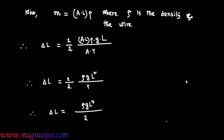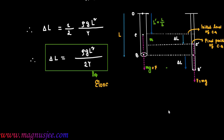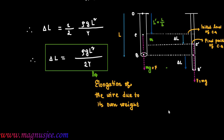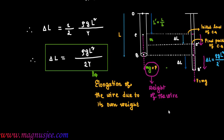That is the expression for the elongation of the wire due to its own weight: Delta L equals rho g L squared divided by 2Y. In the diagram, Mg is the own weight of the wire, equal to the deforming force, which acts from the center of gravity. The elongation Delta L is rho g L squared by 2Y.